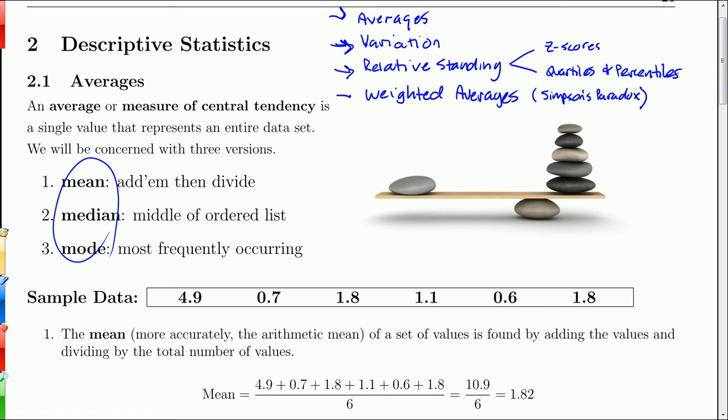And then we'll get into weighted averages, which you see quite a bit, and a problem that arises quite often called Simpson's Paradox.